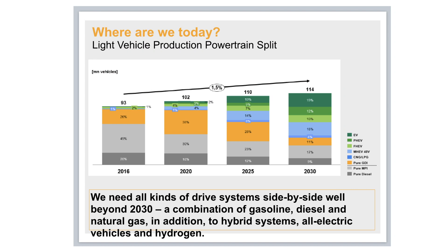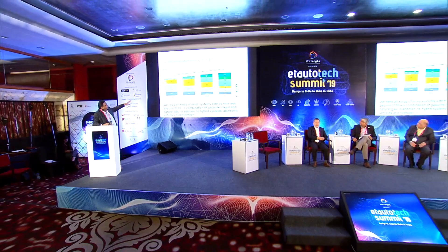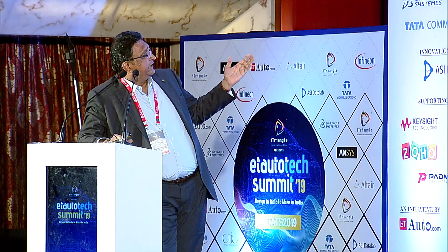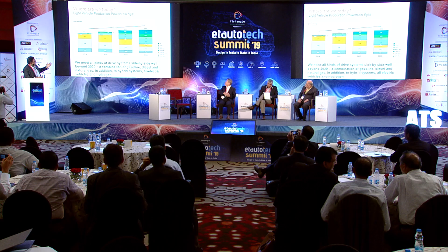To briefly touch on developments on the powertrain side — looking at this graph — in 2016 we had about 20% diesel and about 49% gasoline engines. Looking at the projections: in 2020, diesel comes down from 20% to 18%, then to 9% by 2030, and gasoline declines as well. We at Continental strongly believe that by 2030, still about 40% will be internal combustion engines, about 30% some sort of hybridization, and 30% pure electric vehicles.